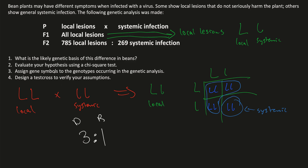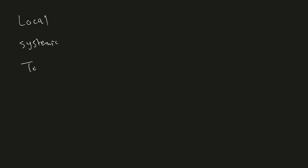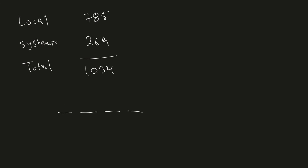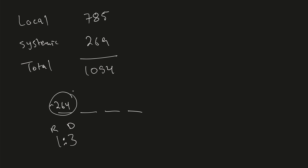We want to evaluate our hypothesis using a chi-square test. We're going to look at the number of local lesions we had and the number of systemic infections, see the total, and calculate some things. For local lesions, we observed 785; for systemic, we observed 269. The total gives us 1,054 samples. If we divide 1,054 by 4, each quarter equals around 264. Assuming a 1 to 3 ratio, we assign 1 part for systemic infections and 3 parts for local lesions, with each part around 264.